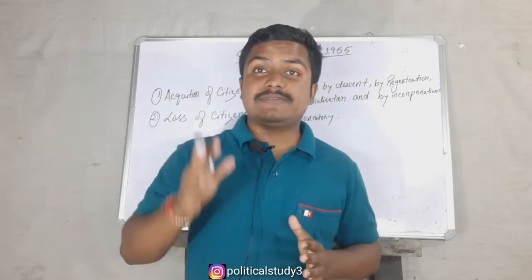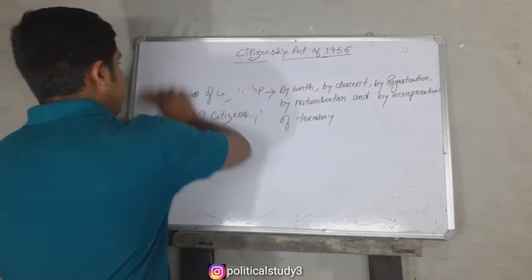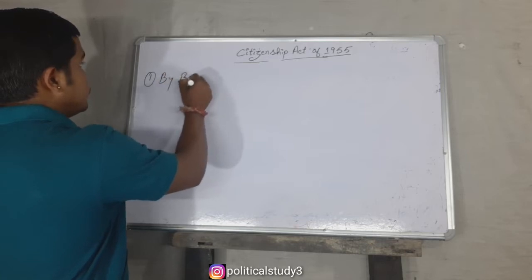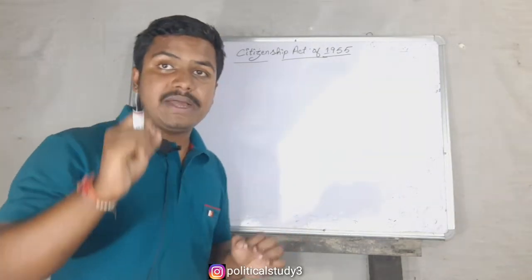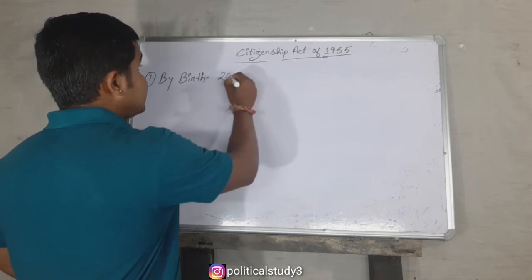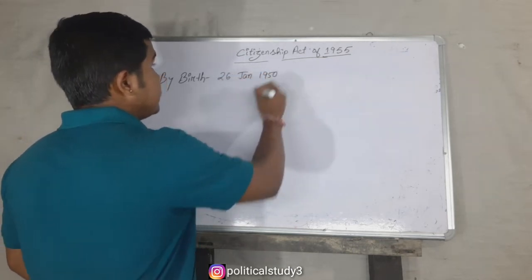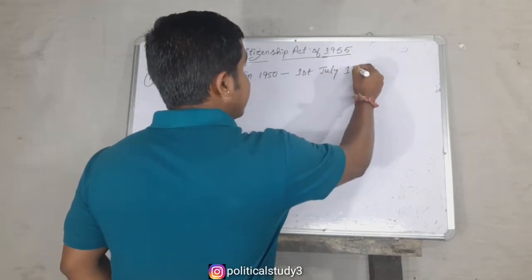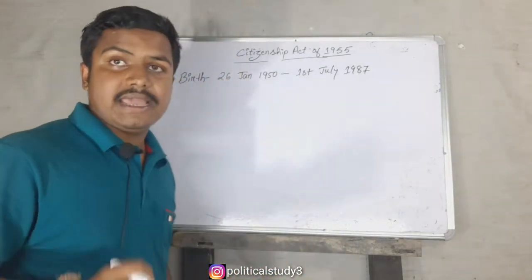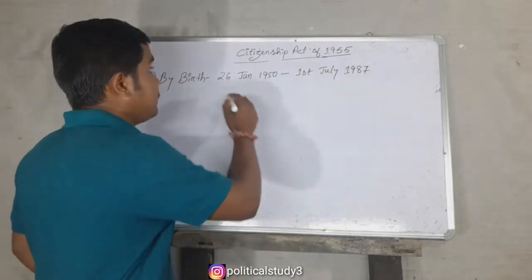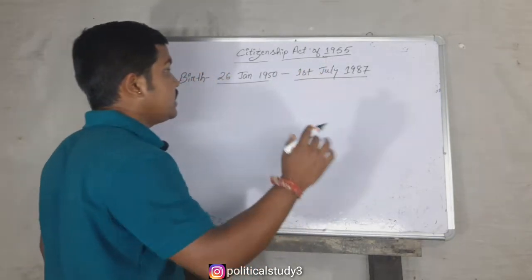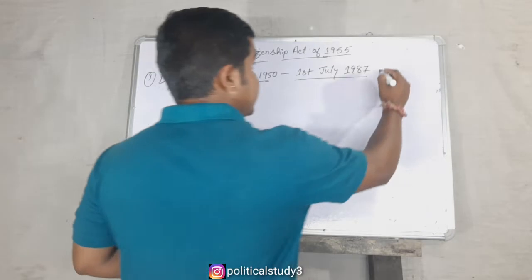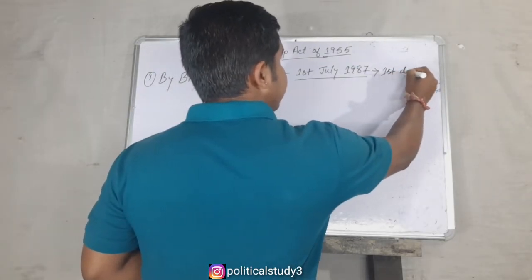Let us discuss these five ways, and our first point is by birth. If a person is born in India on or after 26 January 1950 but before 1st July 1987, then he is a citizen of India irrespective of the nationality of his parents.